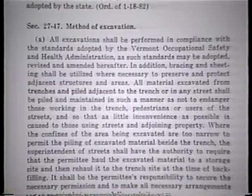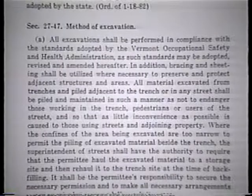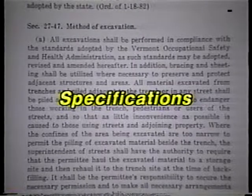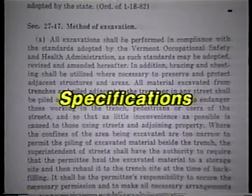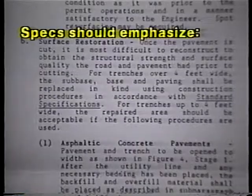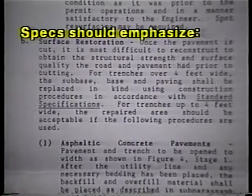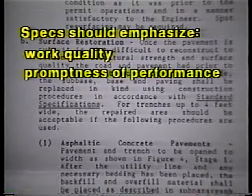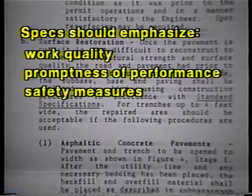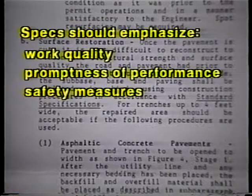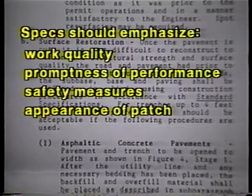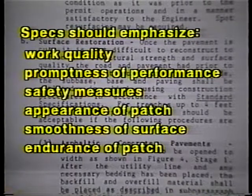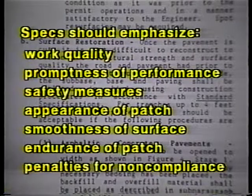Finally, another way of ensuring that utilities make utility cuts properly is through specifications — ones that guide both the utility's work and the agency's inspection of it. In particular, the specifications should emphasize work quality, promptness of performance, safety measures for workers, motorists, and pedestrians, the appearance of the completed patch, the smoothness of the patch surface, the endurance of the patch, and penalties for non-compliance.